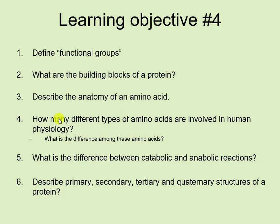Number four: how many different types of amino acids are involved in human physiology? We'll see that there are 20. Number five: what is the difference between catabolic and anabolic reactions? This is not necessarily a protein-specific learning objective, but it's a good place to include it. And number six: describe primary, secondary, tertiary, and quaternary structures of a protein.